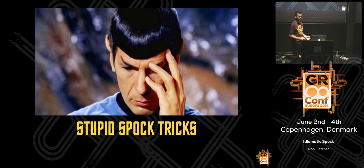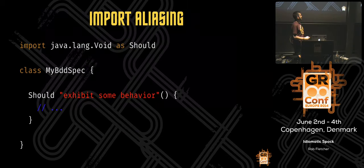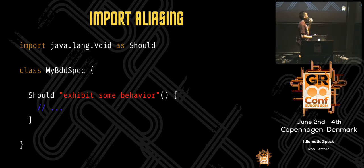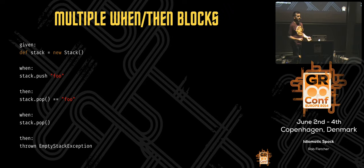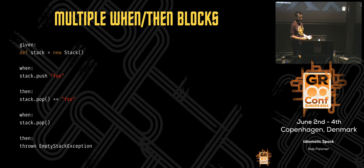A couple of fun things you can do with Spock — don't actually do the first one: I aliased the import of the void type as `should`, enabling BDD-style language like 'should do XYZ.' A slightly more serious one: you can have multiple when-then steps in a specification. It will run the first when, do the assertion, move to the next one, do another assertion. It's not a great way to structure specs — it violates the single responsibility principle — but sometimes it's the right thing to do.